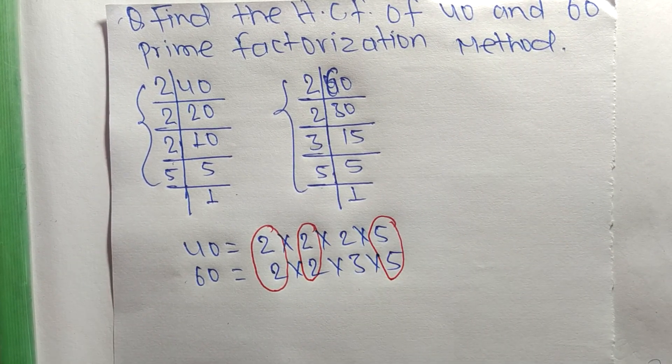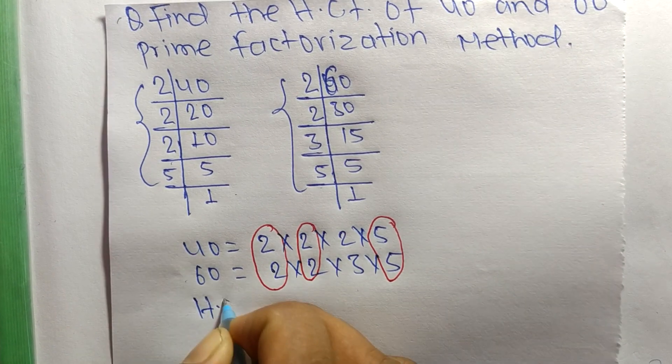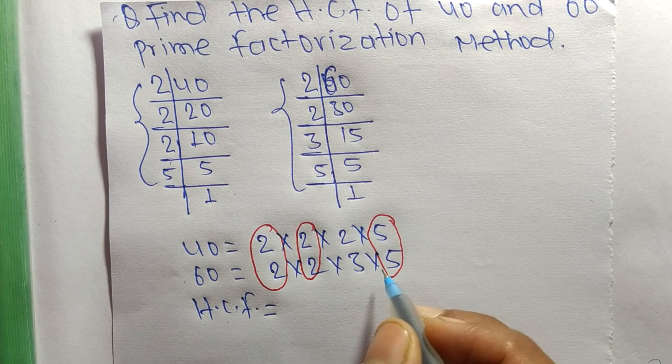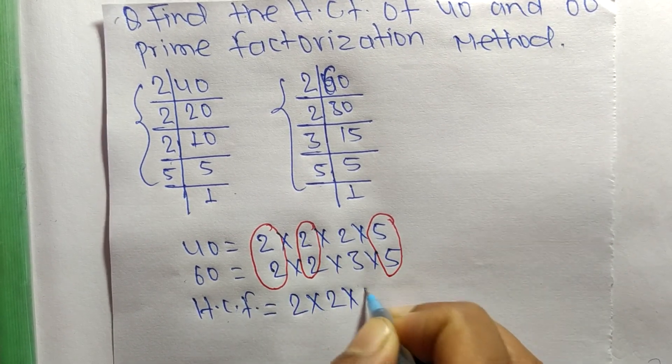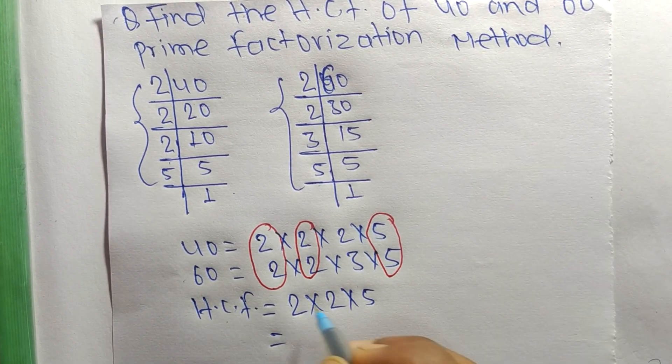The HCF is equal to the product of these common factors. The common factors are 2, 2, and 5, so it equals 2 times 2 equals 4, and 4 times 5 equals 20.